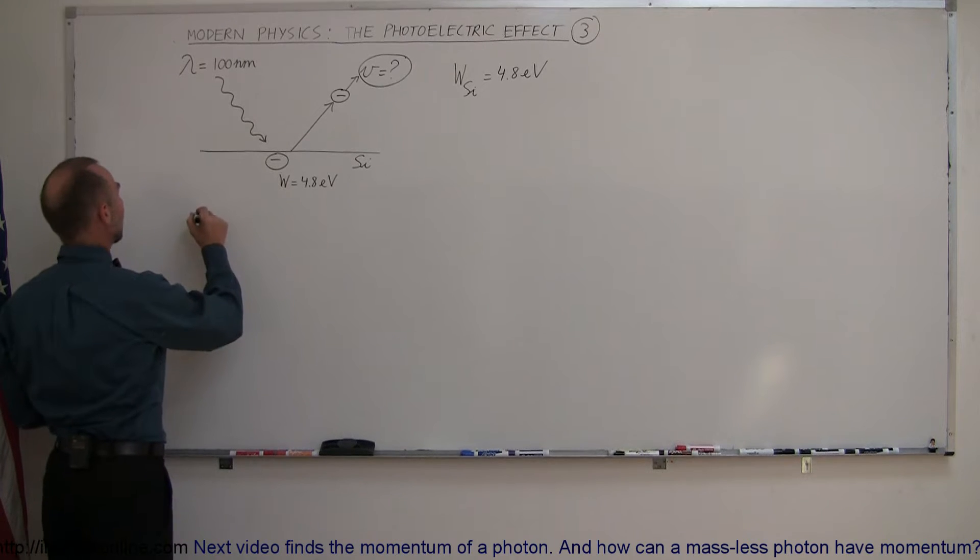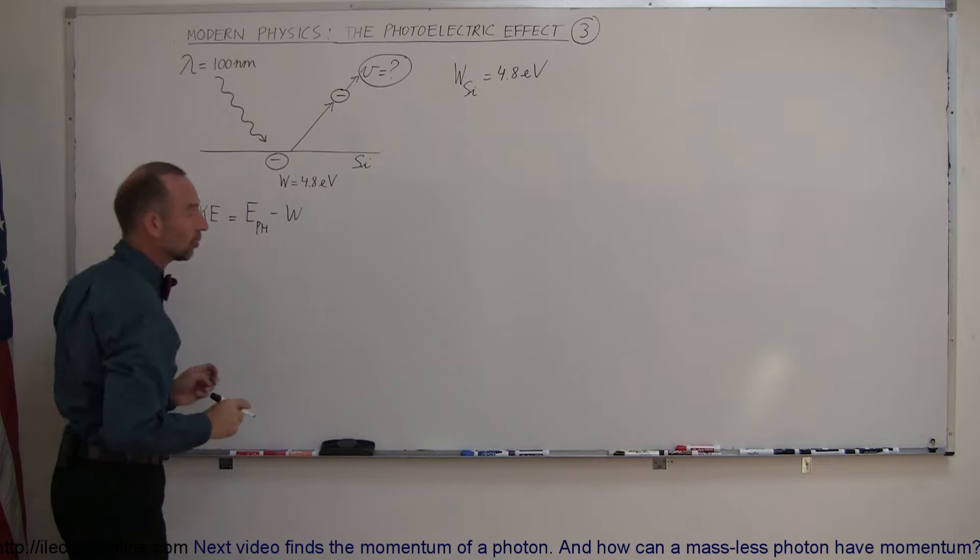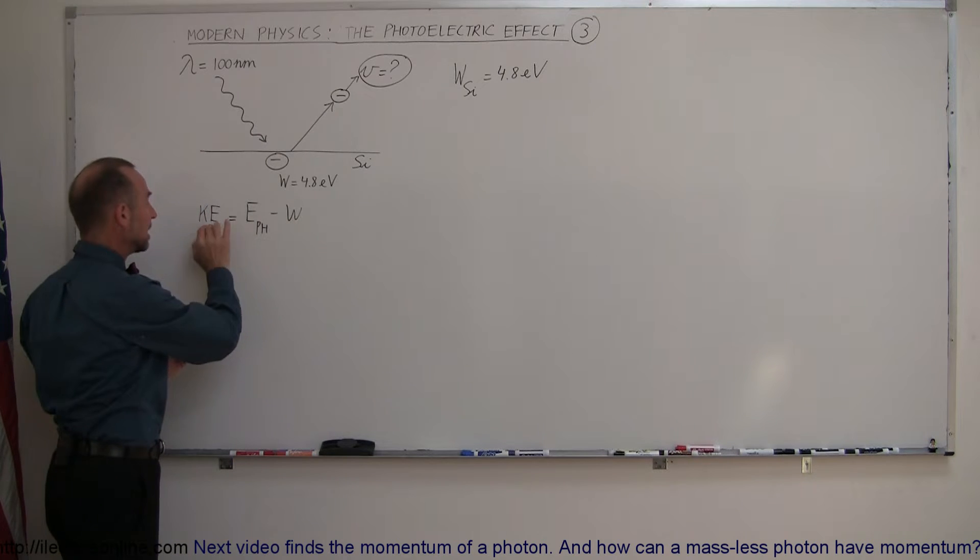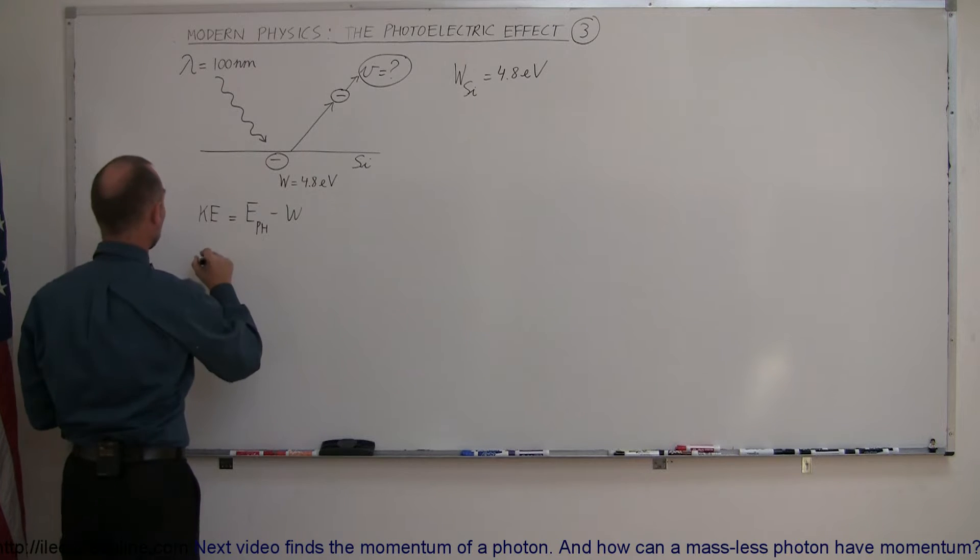Starting again with the same equation, we're going to say that the kinetic energy of the outgoing electron is equal to the energy of the photon, the incoming photon, minus the energy required to overcome the work function. Assuming that this is a positive quantity, it will have some kinetic energy, therefore some velocity. Let's figure out what the kinetic energy is.